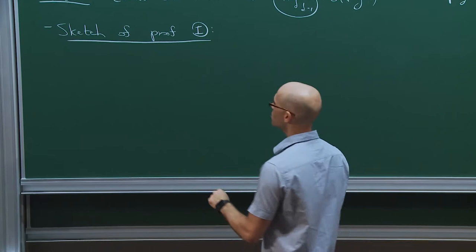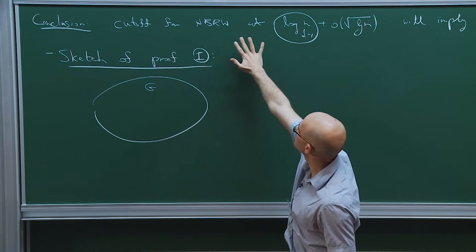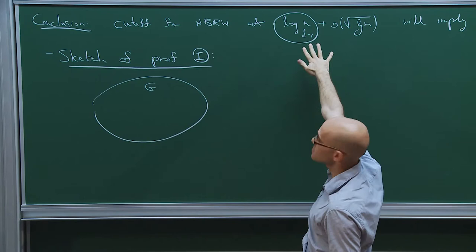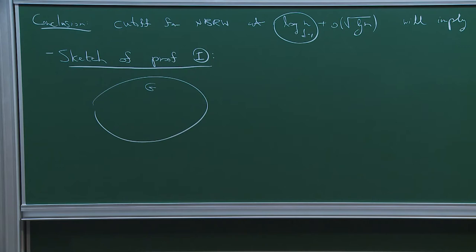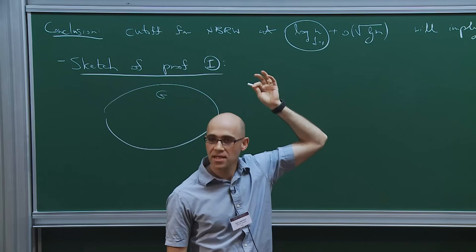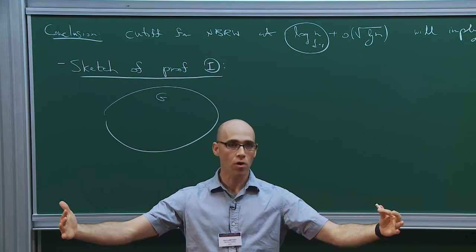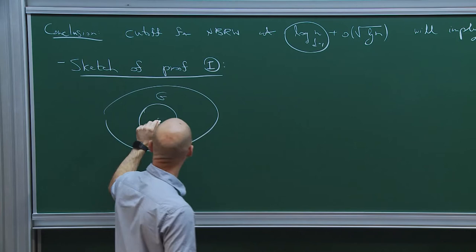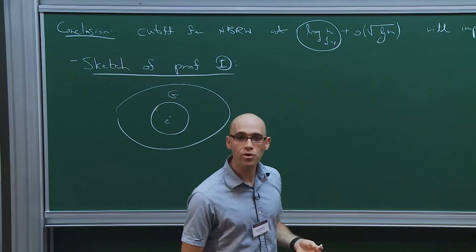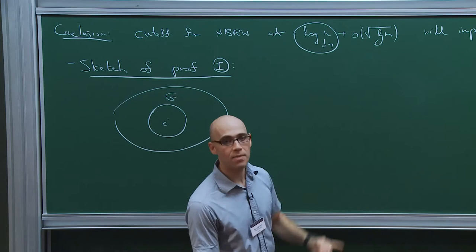What we'd like to do is: we have our graph G, and we want to show there's a cutoff for non-backtracking random walk at this time. We actually just care about the upper bound, because the lower bound is trivial — if you take a time that is log_{d-1}(n) minus something, just think about how many possible states you see. Look at the ball centered at some directed edge E, and you don't have enough time to get to a linear number of edges.